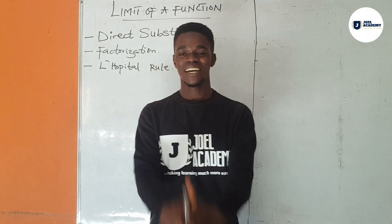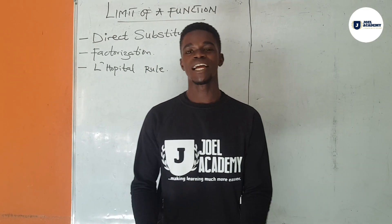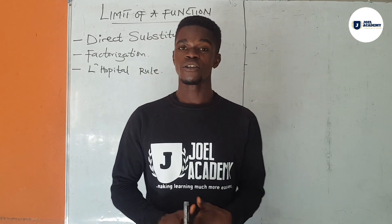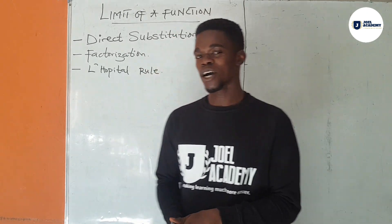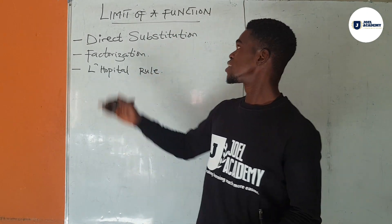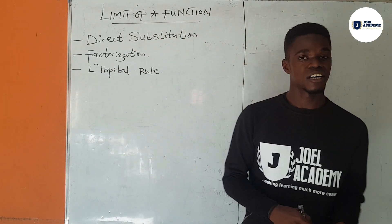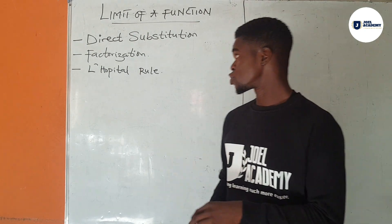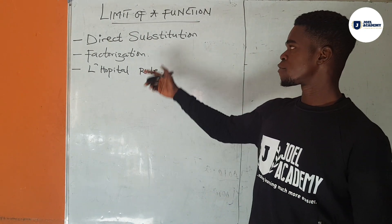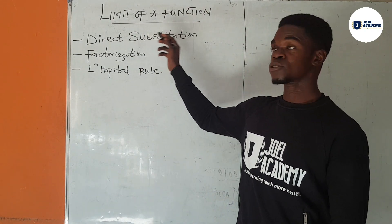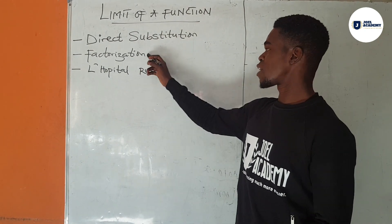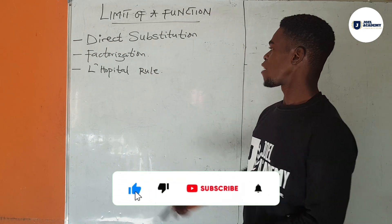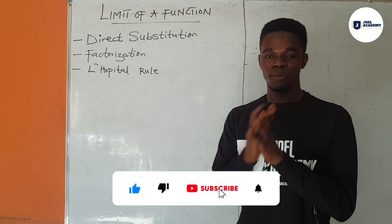Hi and welcome to Jewelers Academy where we will be learning much more easily. Today on Mat121 we will be dealing with the unit of the function. There are three methods: we have the direct substitution method, we have the factorization method, and then we have the rationalization method.